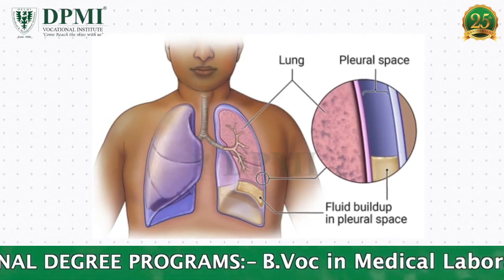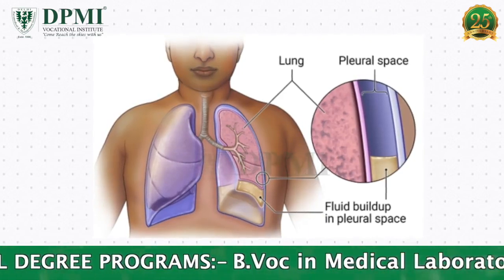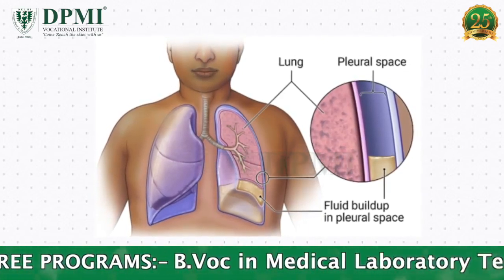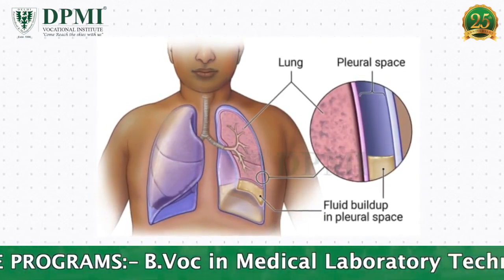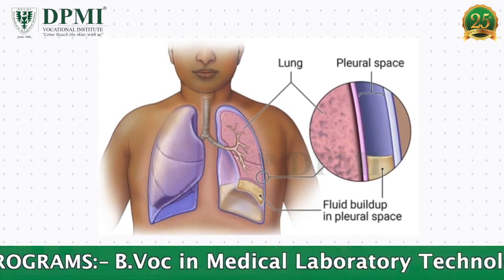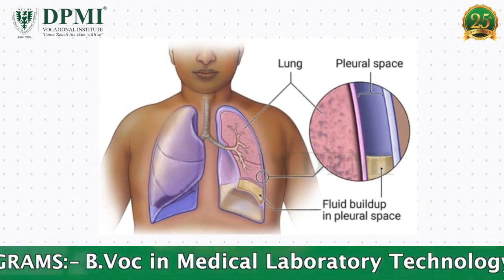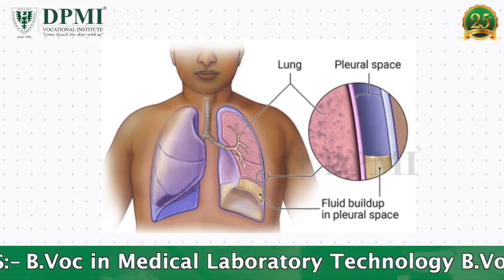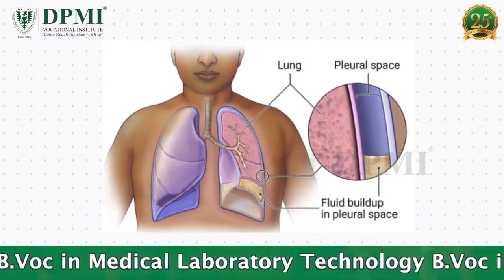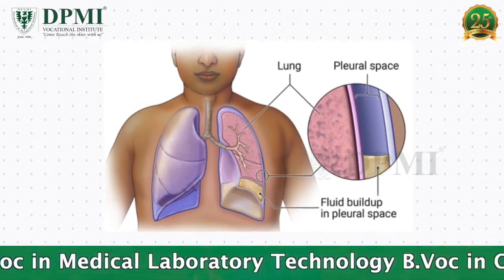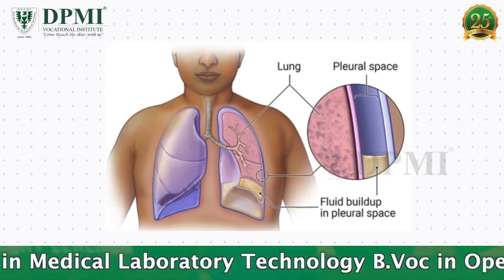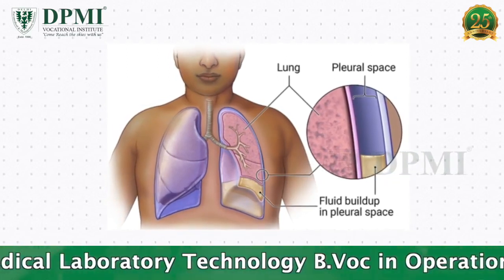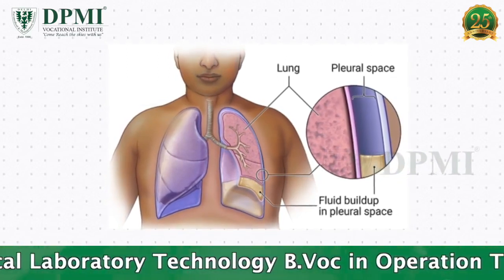The pleural fluid keeps the pleura moist and reduces friction between the membranes when breathing. The area that contains pleural fluid is known as the pleural space. Generally, there is a small amount of pleural fluid in the pleural space.